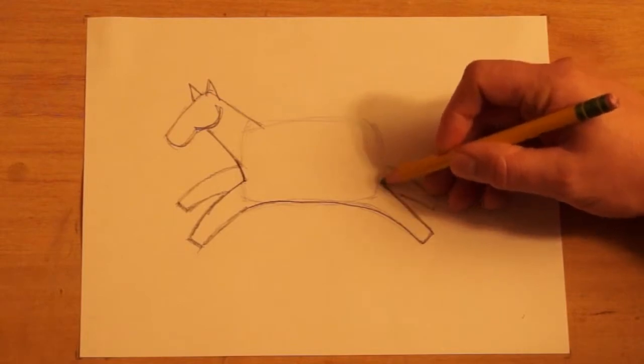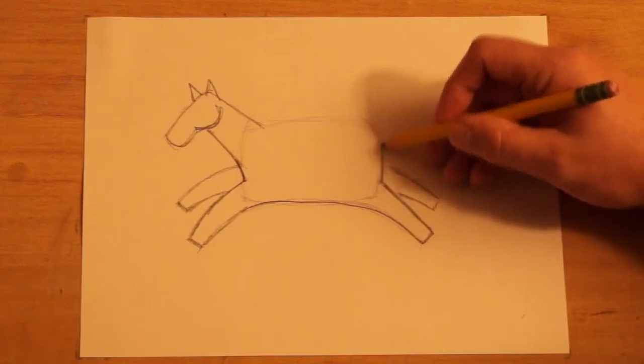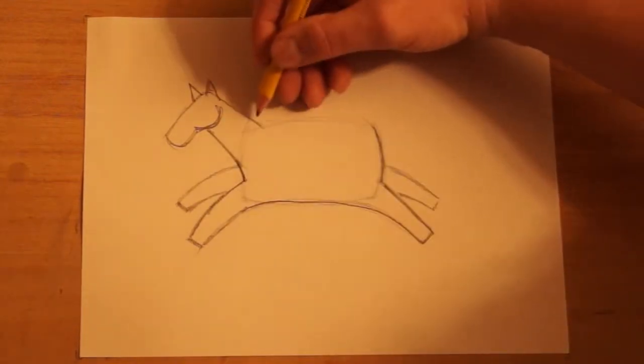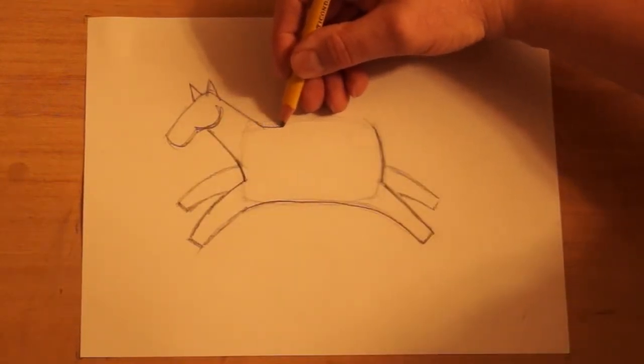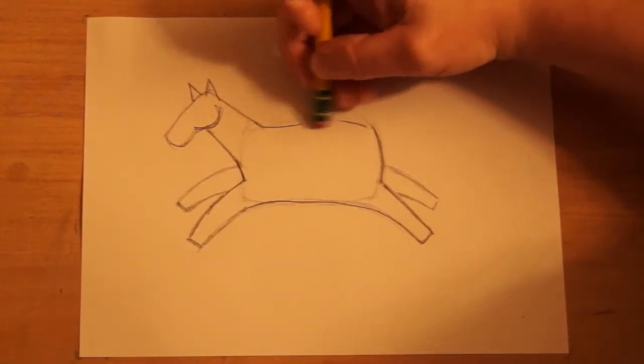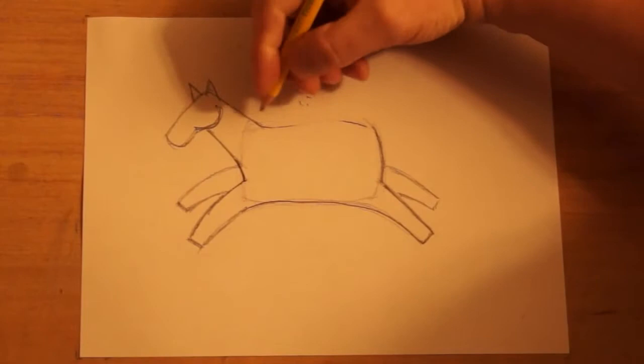And then this back leg here. We're going to go up the body right here. And then the back. Get a little bit of a curve to it. And that kind of gives it a sense of action, like the horse is in motion.